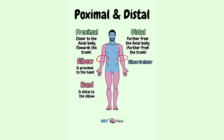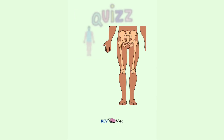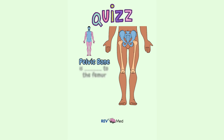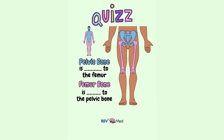Because the elbow is closer to the axial body. So how about this: the pelvic bone is blank to the femur, or the femur bone is blank to the pelvic bone. Comment below what you think.